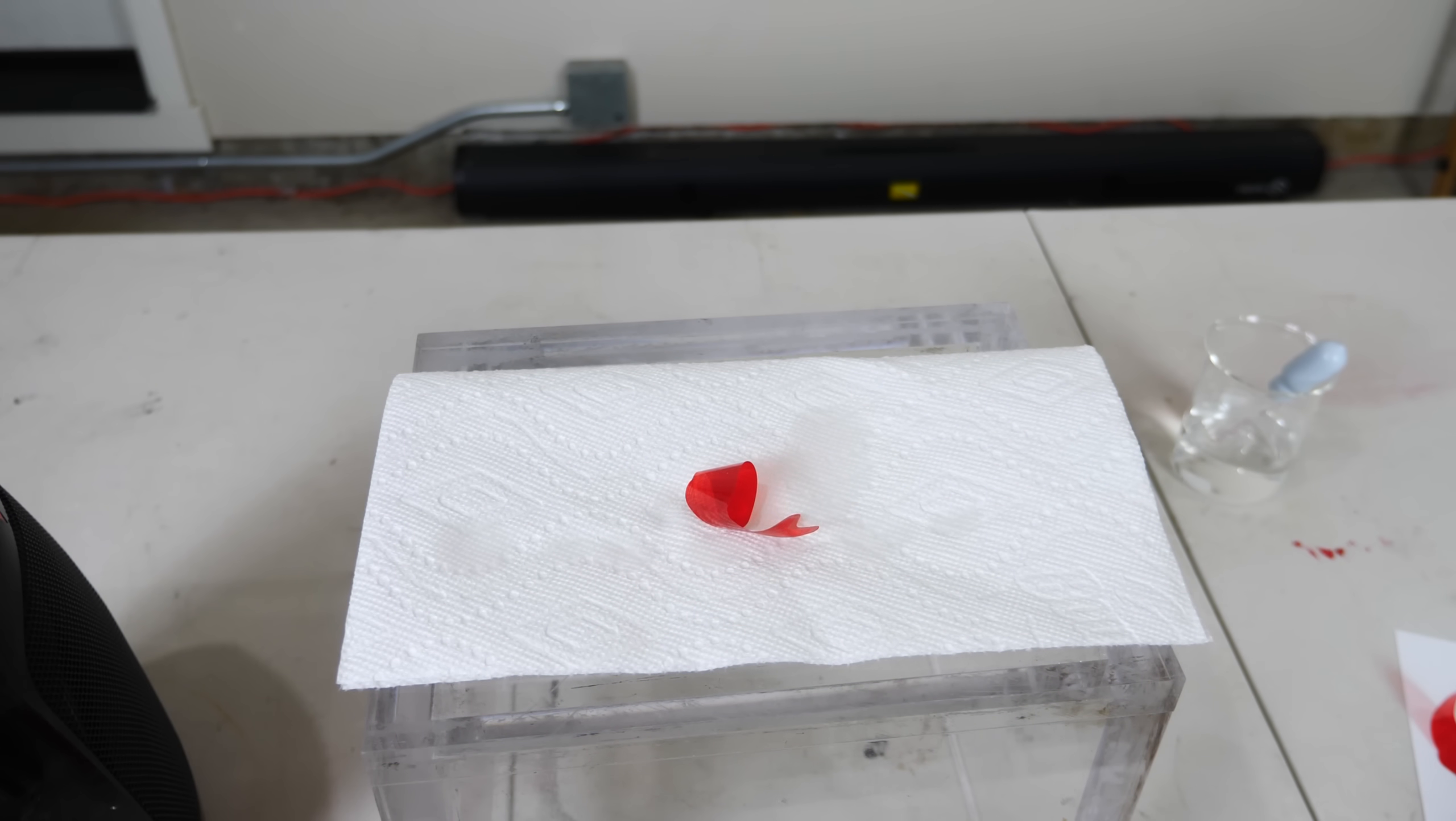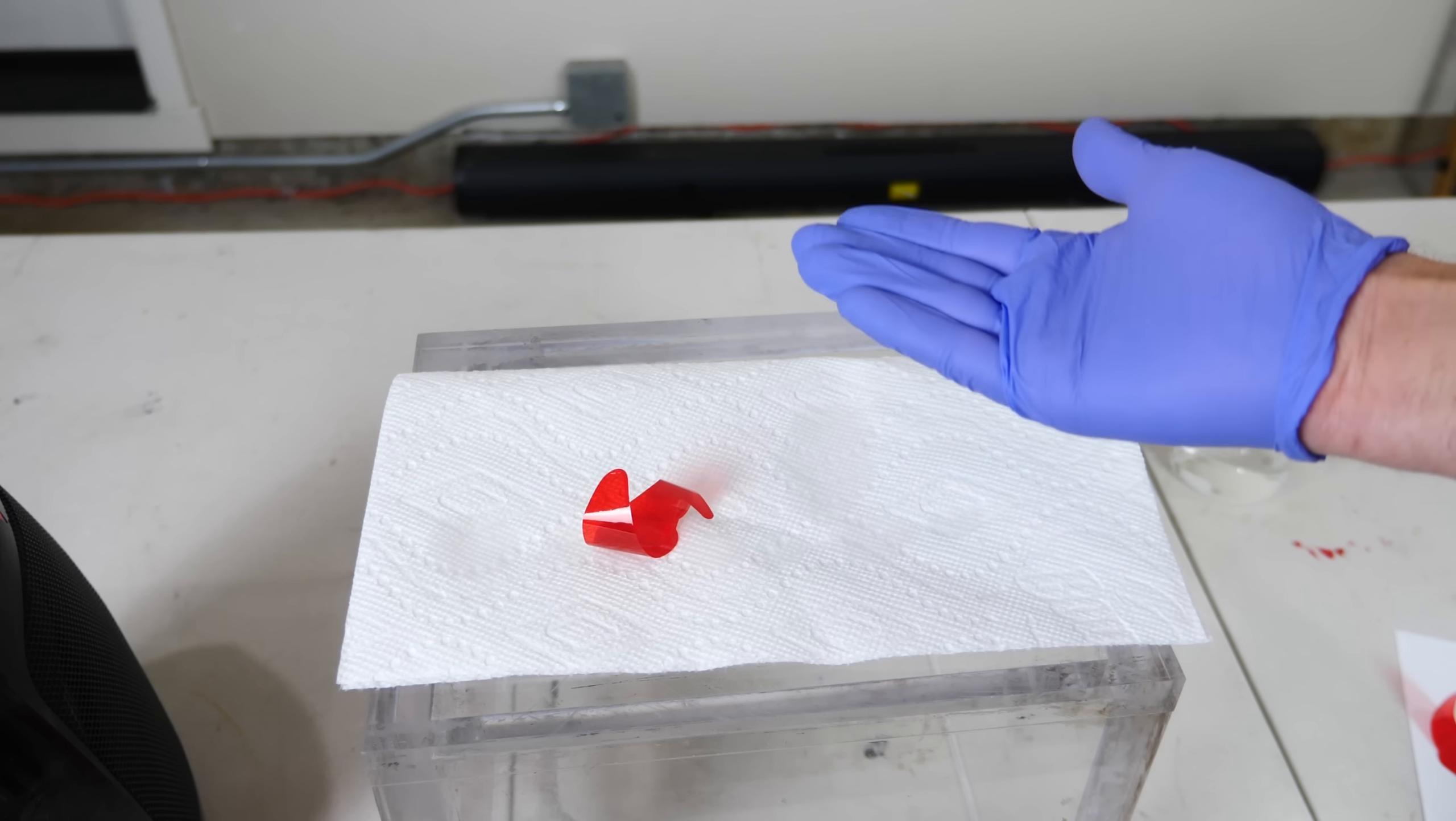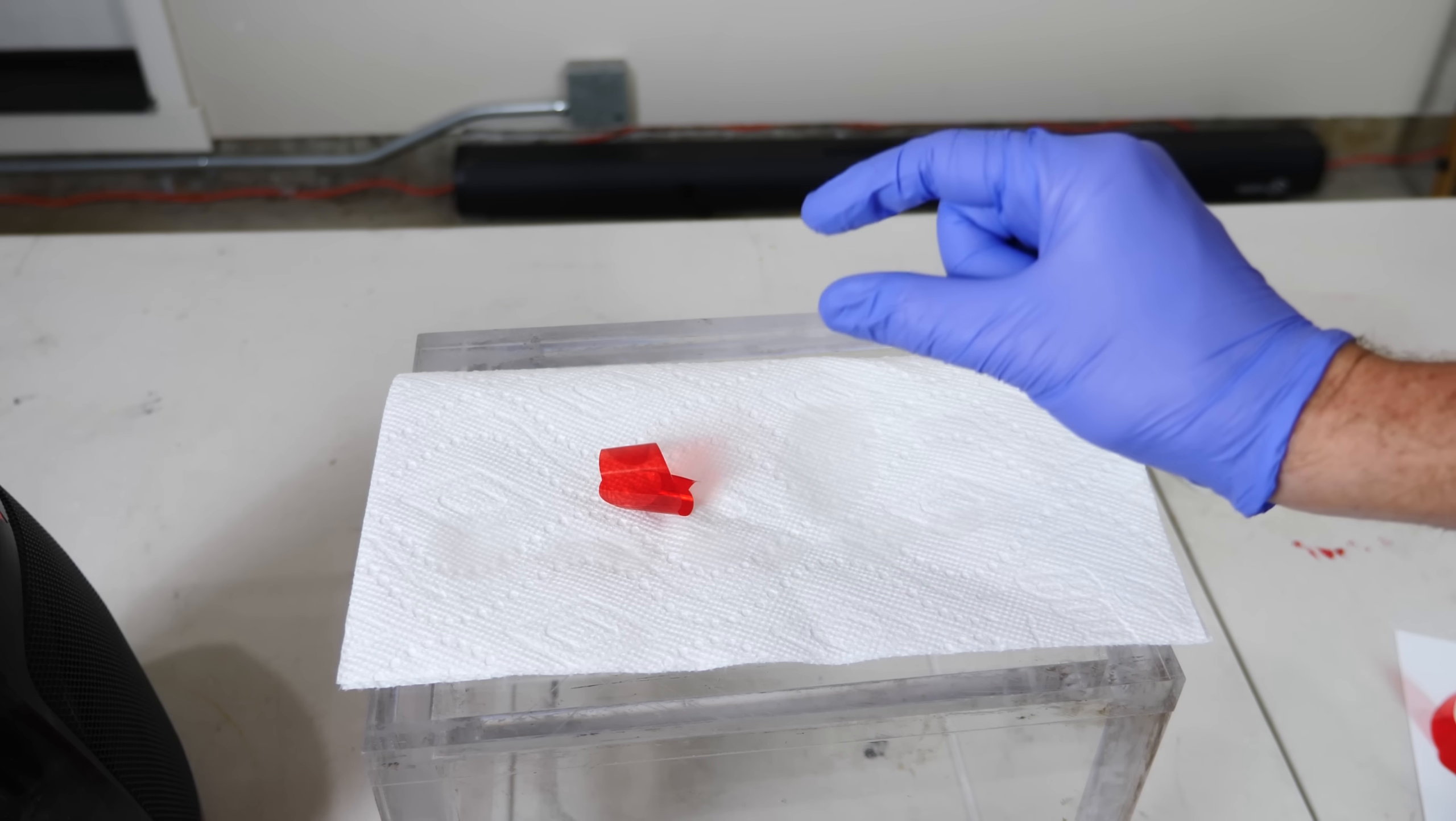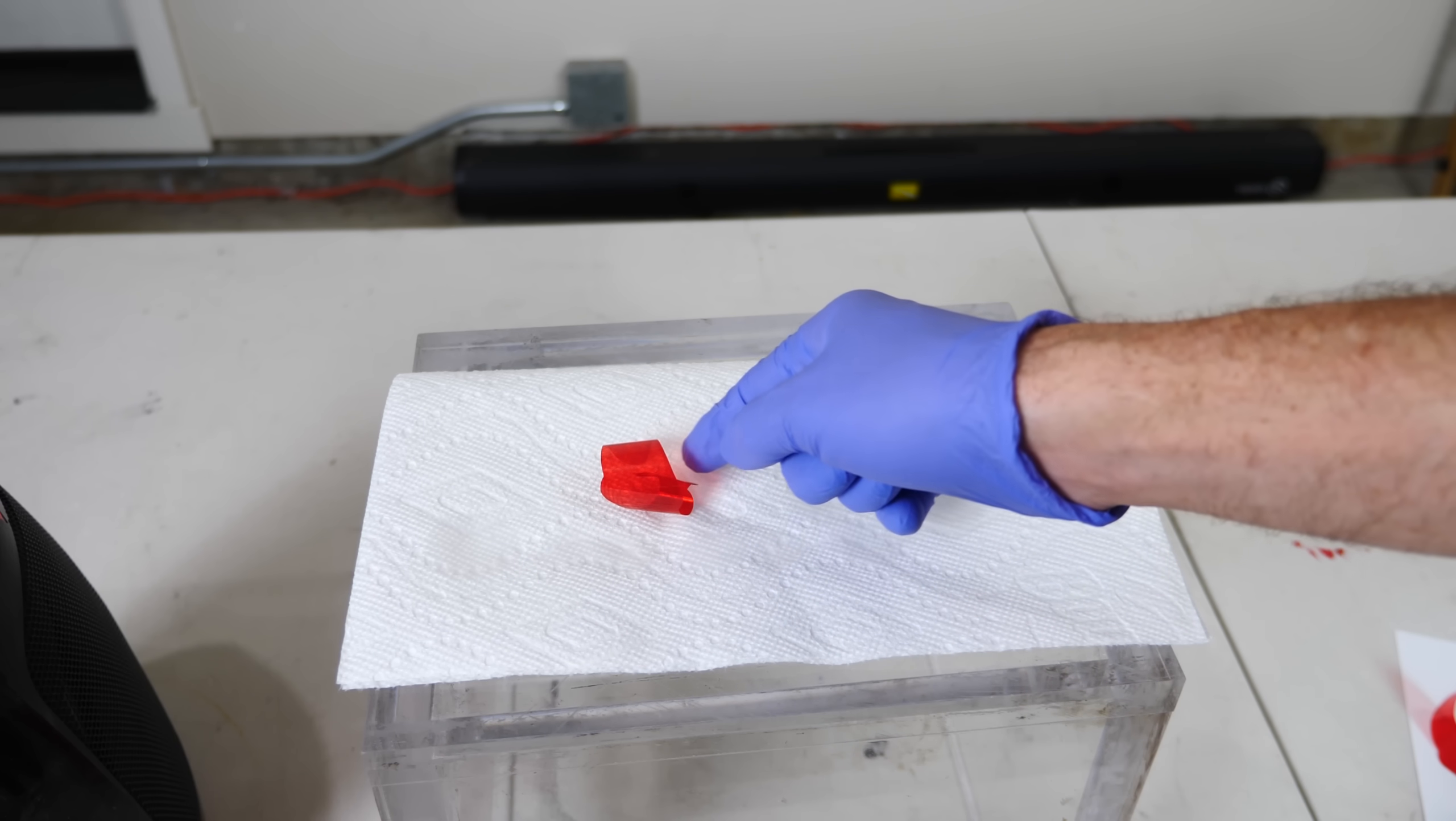So what's interesting about this is it's pretty obvious now it looks like the water is the thing curling it. But it actually works best on my hand and it's not like my hand was wet or anything, so it only takes a tiny little bit of water in order to make this curl.